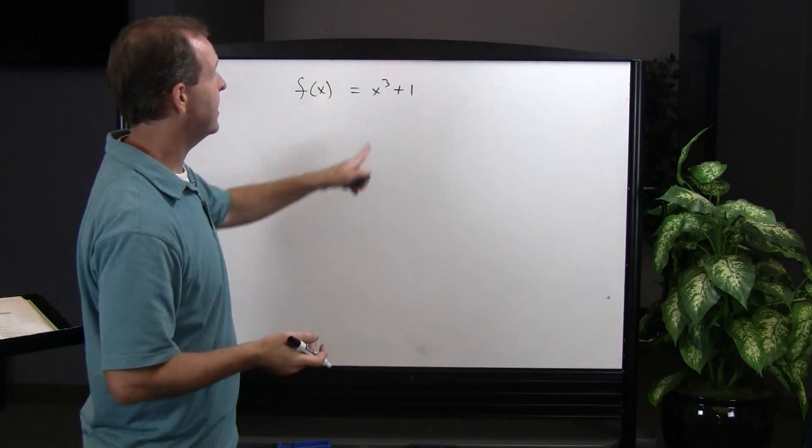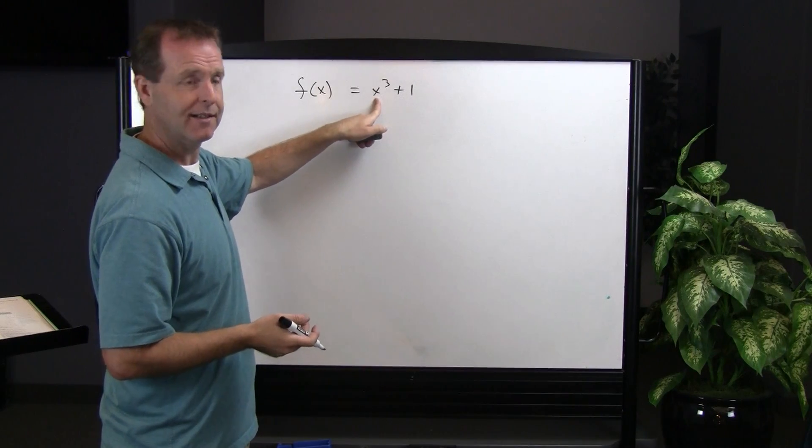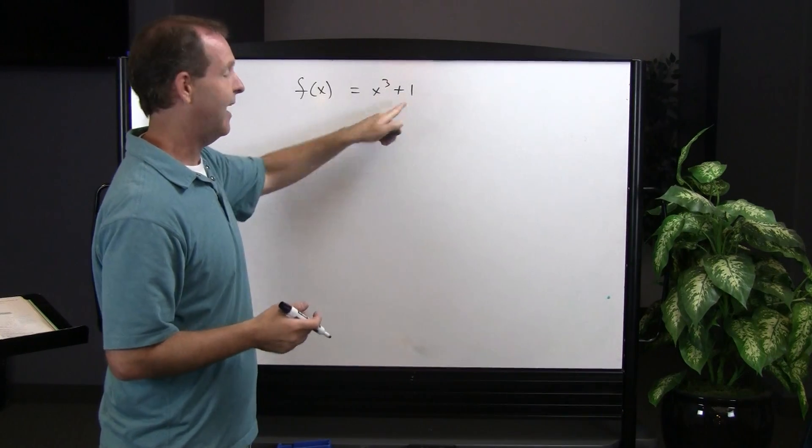And what that's doing is it's taking some value of x, cubing it, and then adding 1 to it.